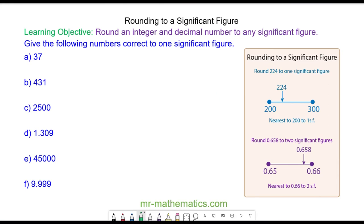Hello and welcome to our lesson on rounding a number to a significant figure. We have a number 37. The most significant digit in this number is the 3 because it has the highest value.